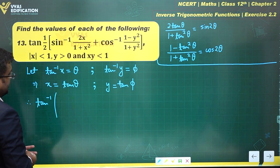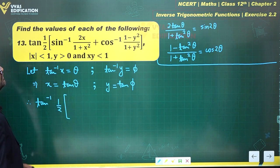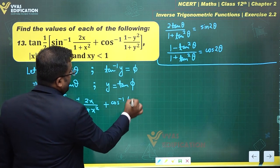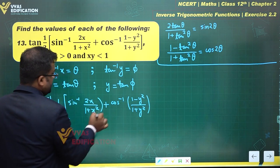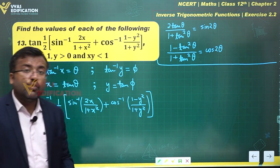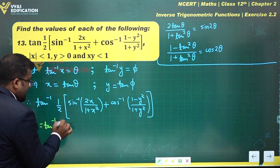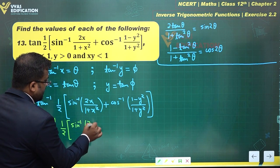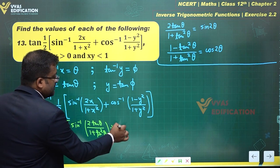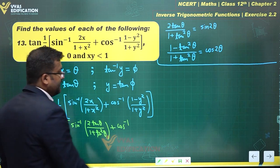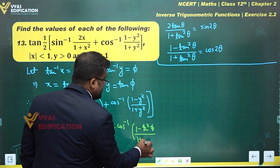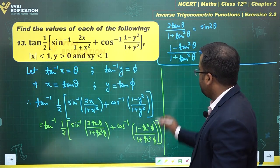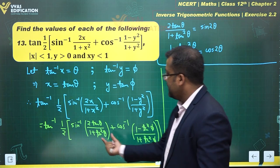Therefore the expression tan inverse of half of [sin inverse 2x/(1+x²) + cos inverse (1-y²)/(1+y²)] becomes tan inverse of half of [sin inverse (2tanθ/(1+tan²θ)) + cos inverse ((1-tan²φ)/(1+tan²φ))].